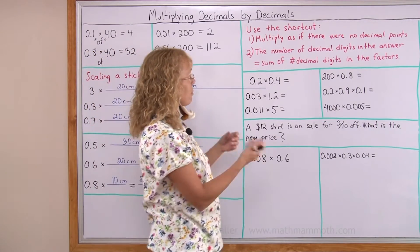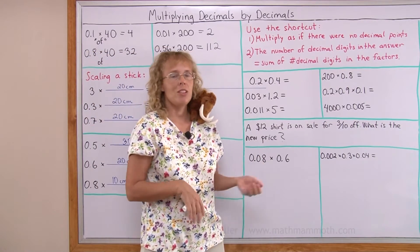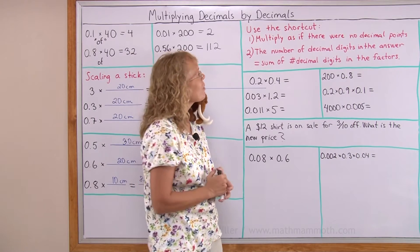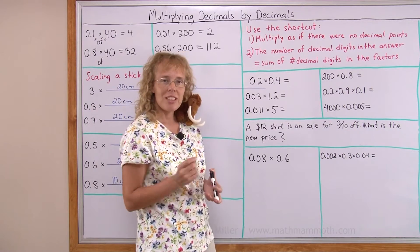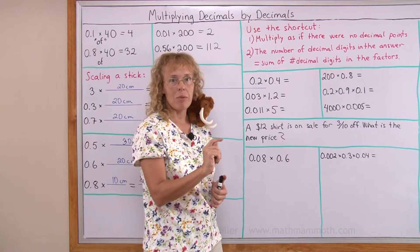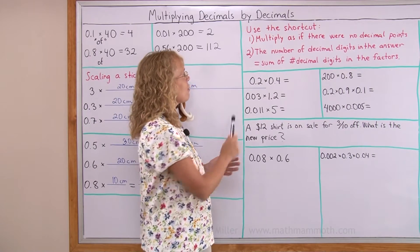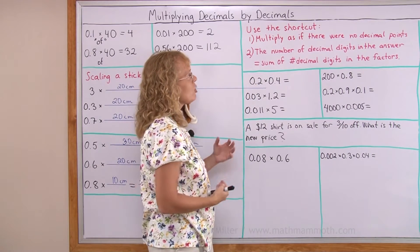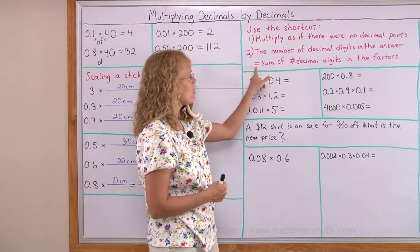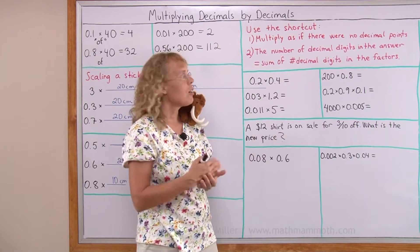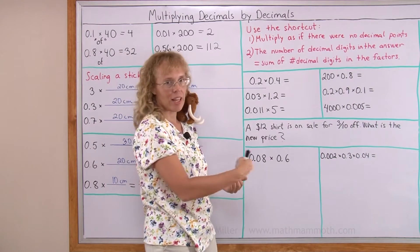If you have decimals, multiply as if there were no decimal points. Just use your multiplication tables or whatever. And then you have to put the decimal point in the answer somewhere. And where? It's given by rule number two. The number of decimal digits in the answer has to be equal to the sum of decimal digits in all the factors.